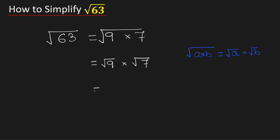We know that square root of 9 is 3, and root 7 cannot be simplified further because 7 is a prime number. Multiplying, we get 3 root 7.